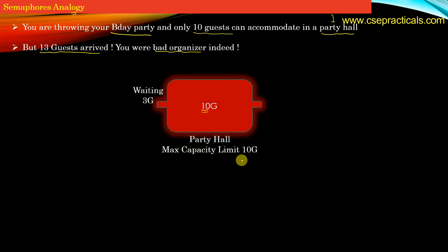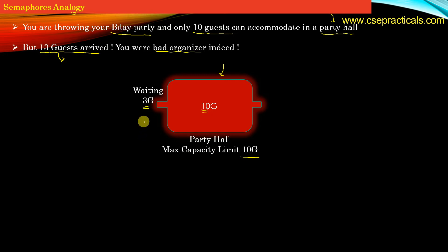You have a party hall with a maximum capacity of 10 guests, but on your birthday 13 guests arrived. We have a strict restriction that at any point of time not more than 10 guests can be accommodated into this party hall. So it is quite obvious that out of 13 guests, 3 guests have to wait outside. The first 10 guests entered into the party hall and they are enjoying the party, whereas the 3 late comers have to wait outside.